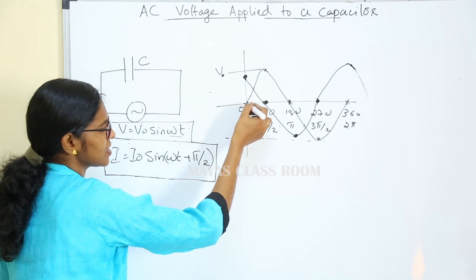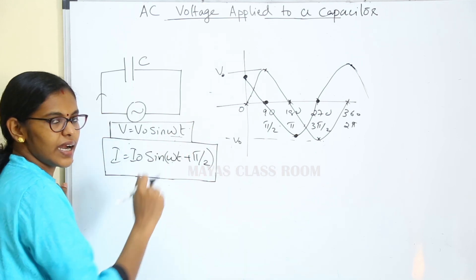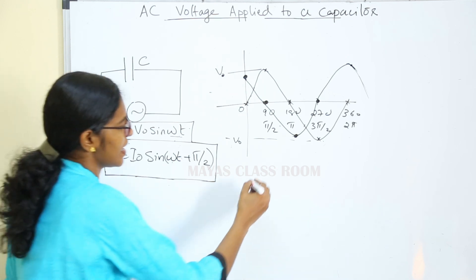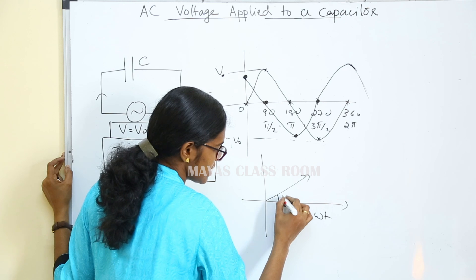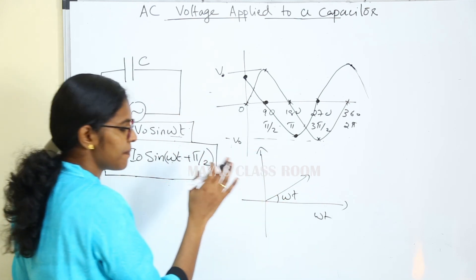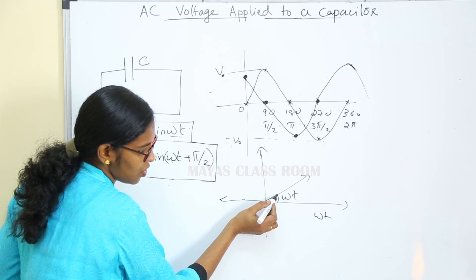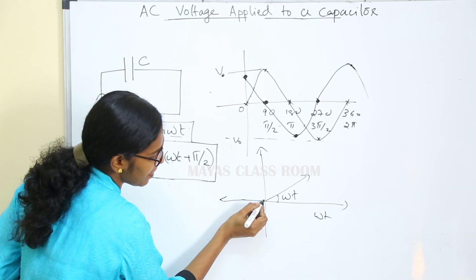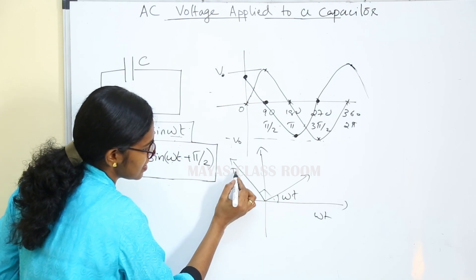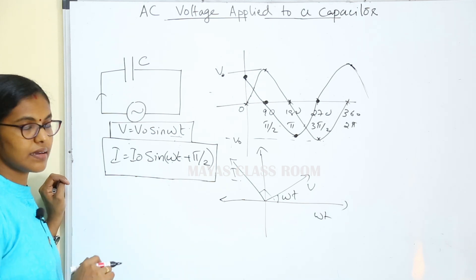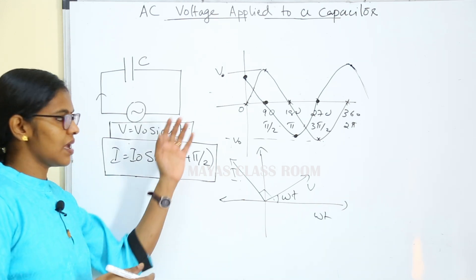Now for the phase diagram: the voltage phasor is at angle ωt, and the current phasor is at angle ωt plus π/2. We put the phasor diagram. This is the phase diagram representing AC voltage applied to a capacitor.